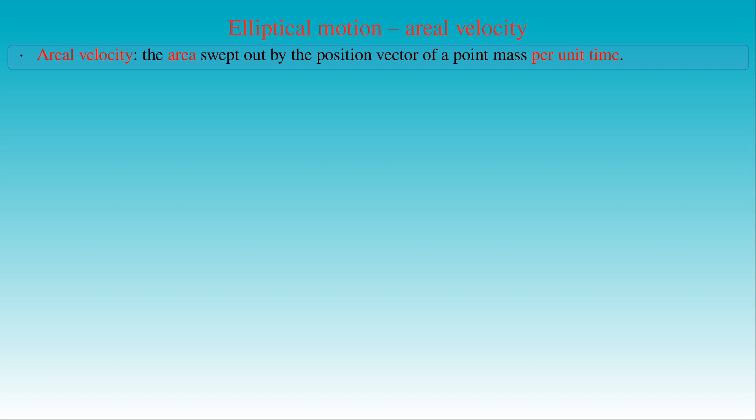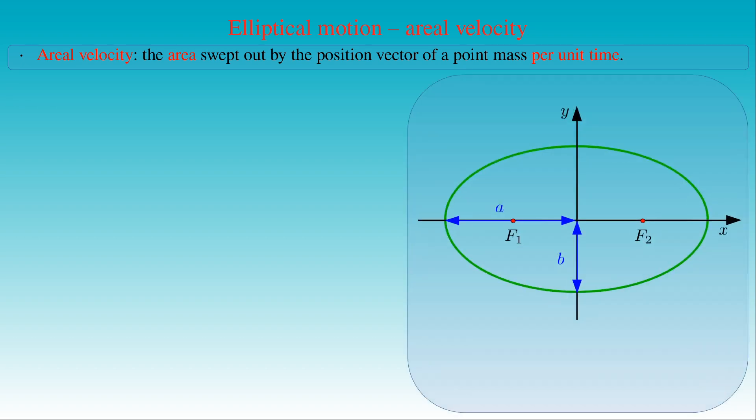Aerial velocity of a point mass is defined by the area swept out by the position vector of the point mass per unit time. We will illustrate what this quantity means in the case of elliptical motion. Here we see an ellipse with the foci F1 and F2.